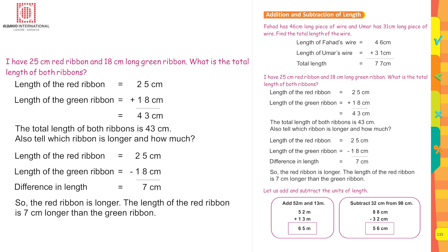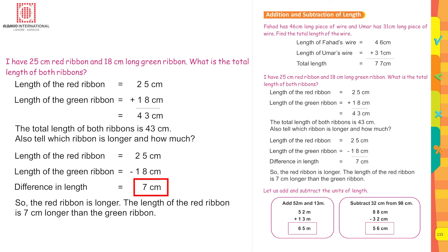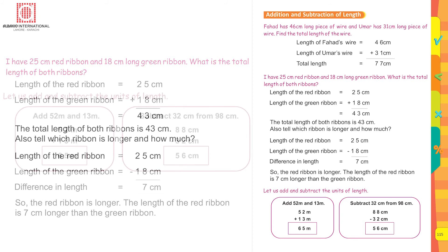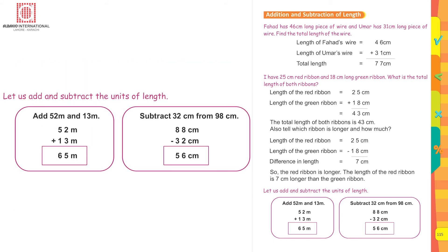Also find which ribbon is longer and by how much. Write the longer ribbon's length first — 25 cm — then subtract the shorter ribbon's length — 18 cm. 25 minus 18 equals 7 centimeters. So the red ribbon is 7 centimeters longer than the green ribbon.